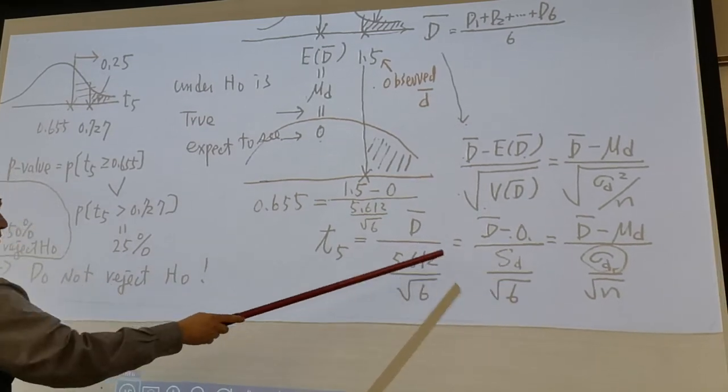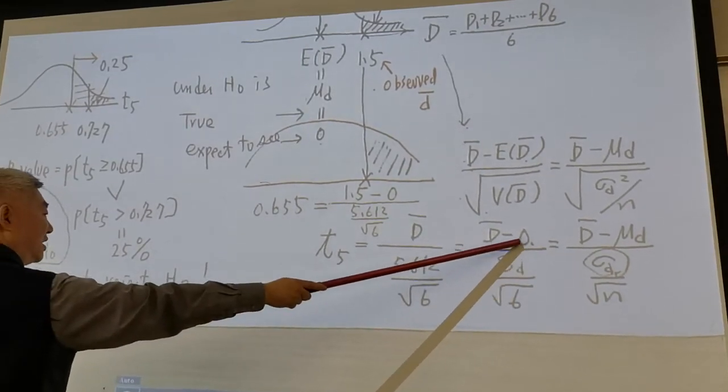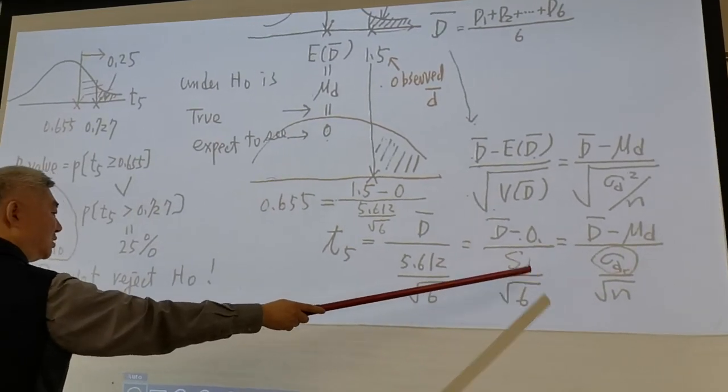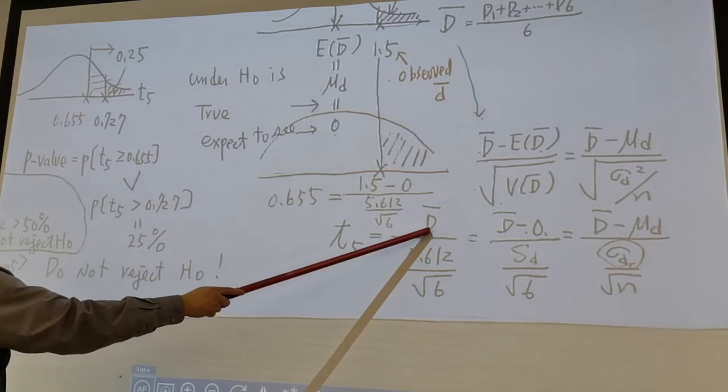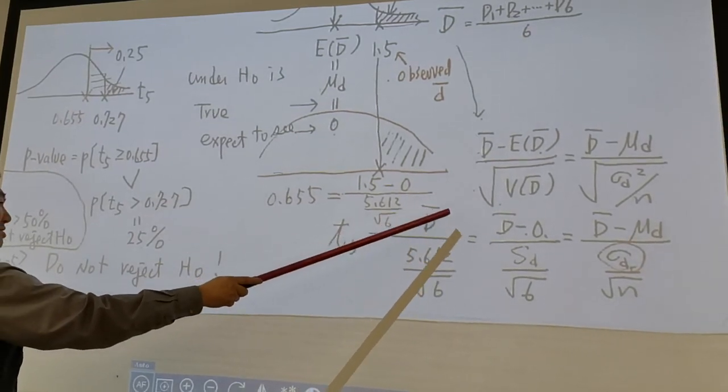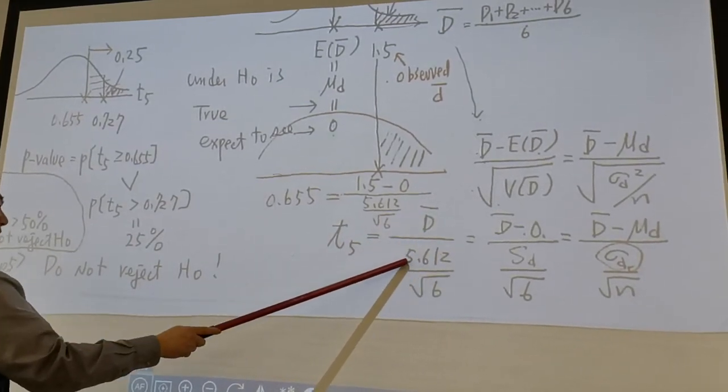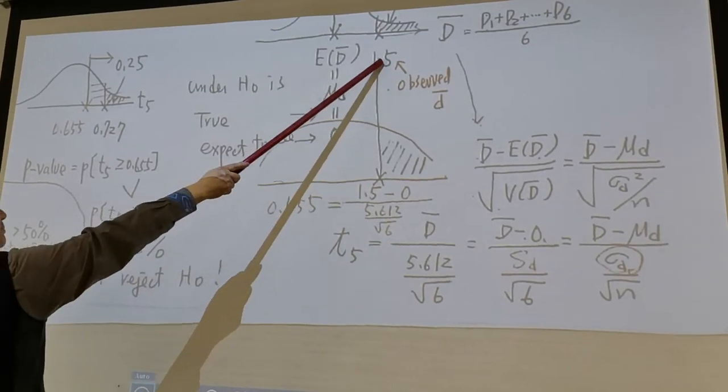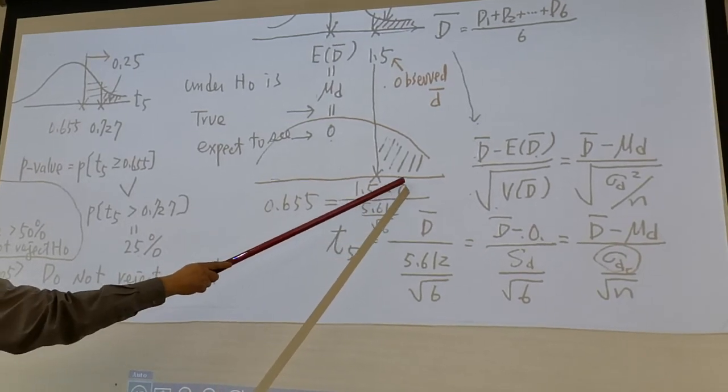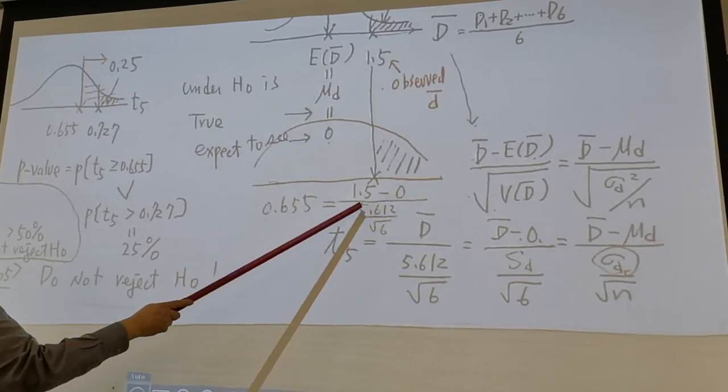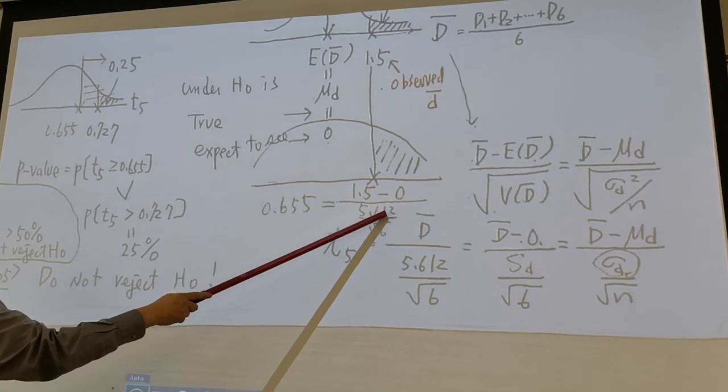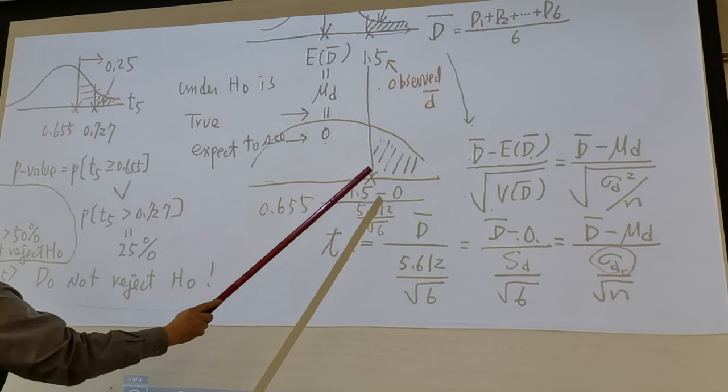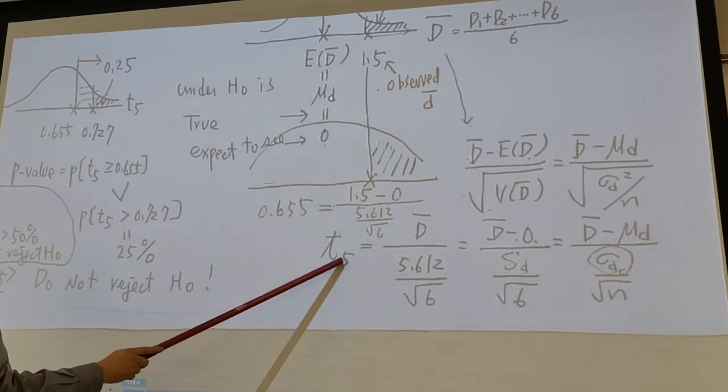So let's plug in the number. Under H₀ is true, μd is 0. Sd we calculated before, it's 5.612. And sample size is 6. So standardization goes this way: d-bar subtract 0 divided by 5.612 over square root of 6. So same thing, 1.5 minus 0, μd under H₀ is 0, then divided by 5.612 over square root of 6. And this gives 0.655.